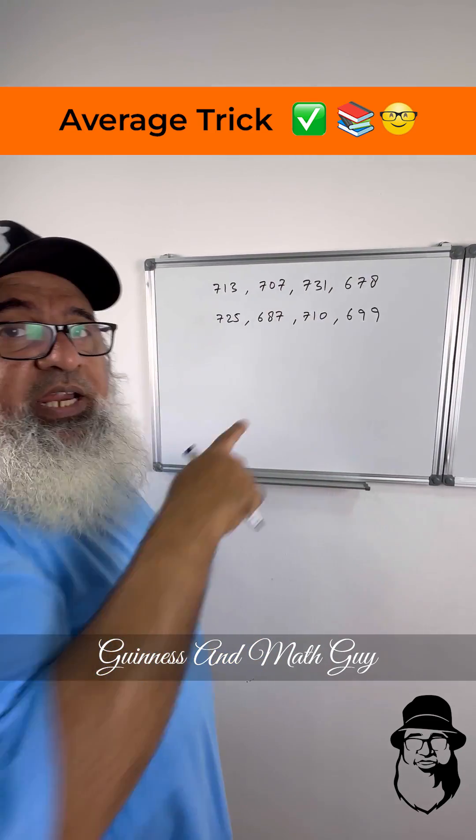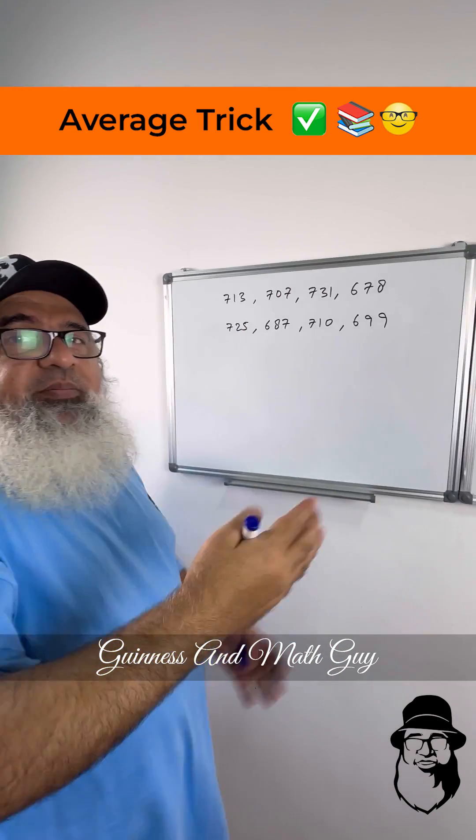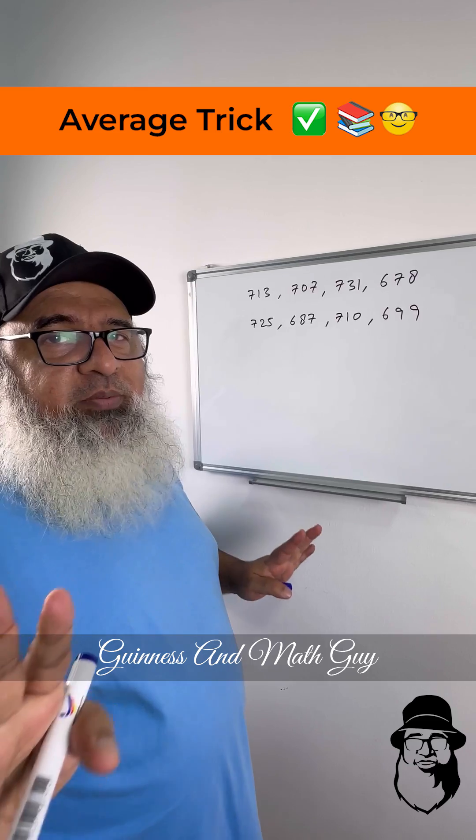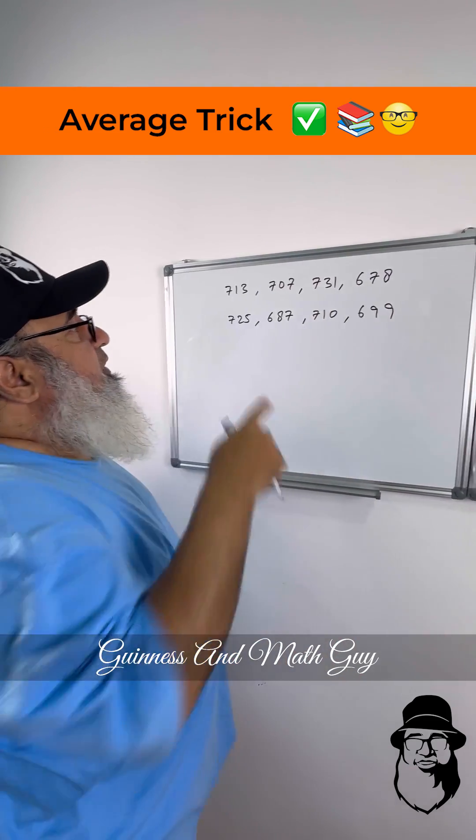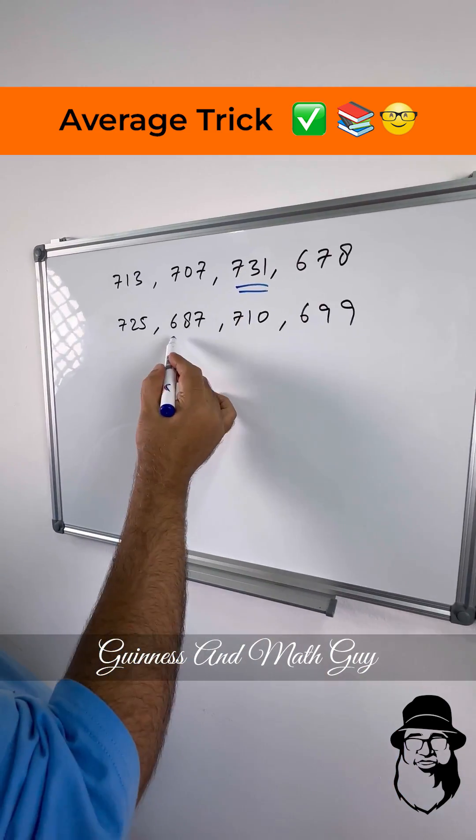If you want the average of these eight numbers and if you are adding them and dividing by eight, the time will be up in competition exams. What you can do is find the biggest and the smallest numbers.